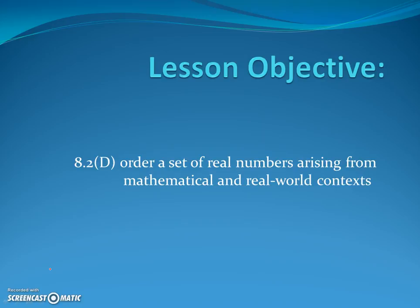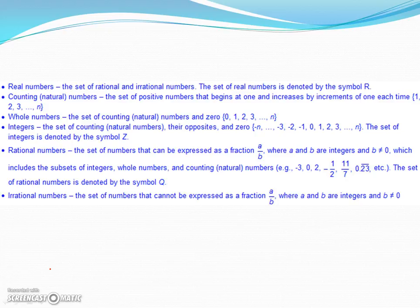Today's lesson objective is 8.2d: order a set of real numbers arising from mathematical and real-world contexts. To begin, we should become familiar with what types of numbers are out there. Most numbers fall in the category called real numbers. These are the set of rational and irrational numbers. The set of real numbers is denoted by the symbol capital R.